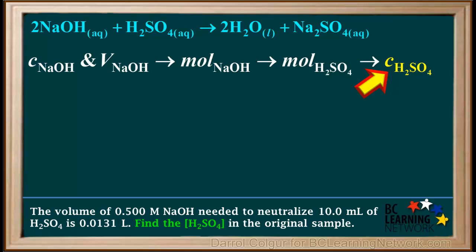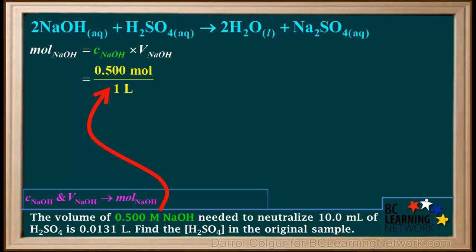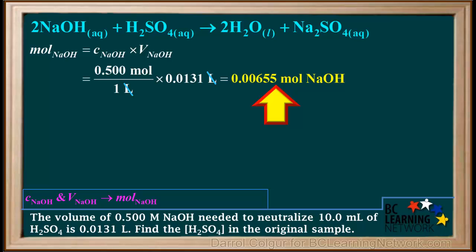The concentration of H₂SO₄ can be represented as C(H₂SO₄) or [H₂SO₄]. The first step is to calculate the moles of NaOH. Moles equals concentration times volume: 0.5 moles per liter multiplied by 0.0131 liters. The liters cancel, giving 0.00655 moles of NaOH.